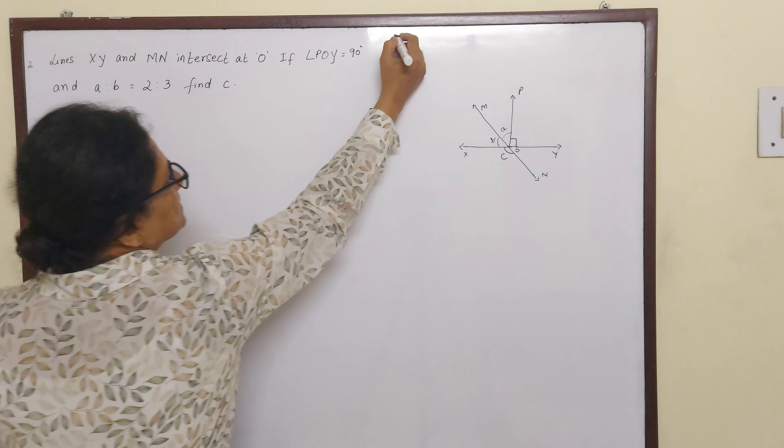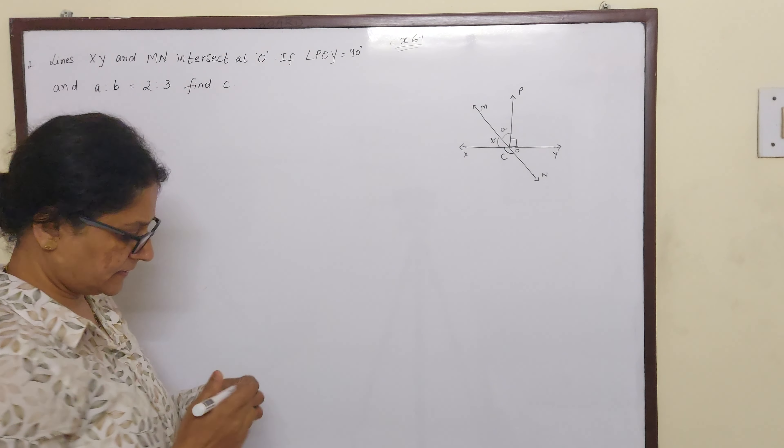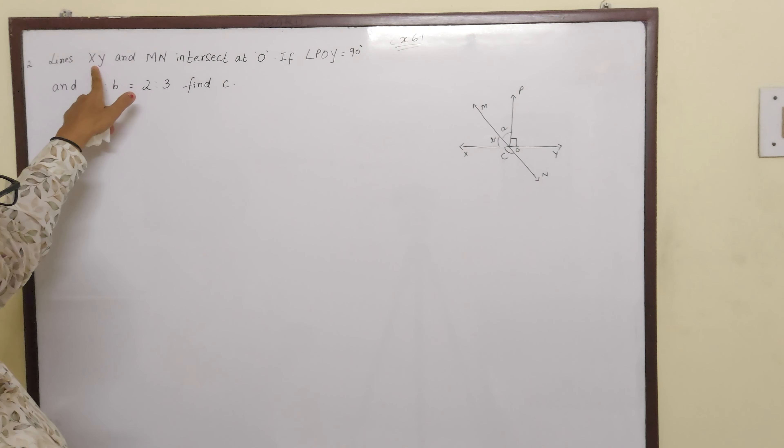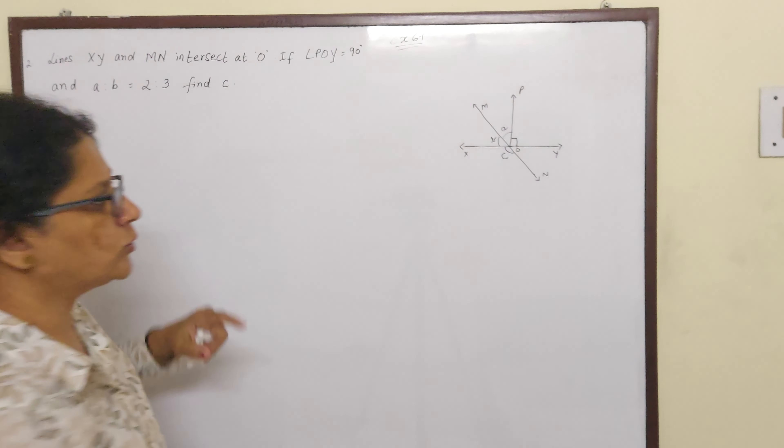This is exercise 6.1, second sum children. Now they say that lines XY and MN intersect at O.